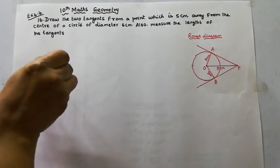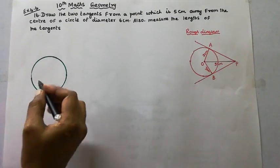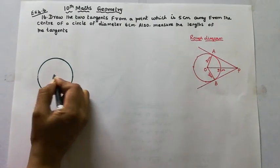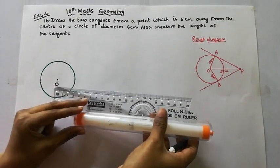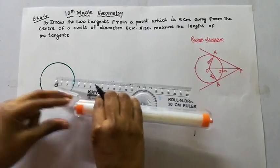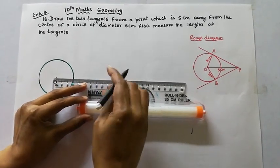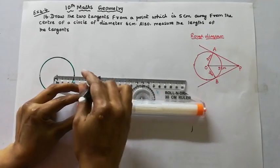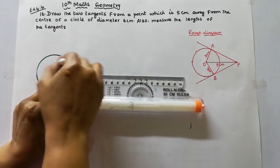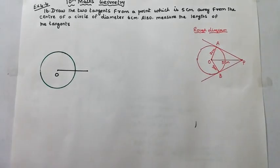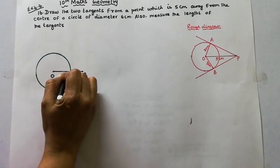Now draw the center of the circle with diameter 6 centimeters and radius 3 centimeters. Find the center, then mark the external point P which is 5 cm away from the center.